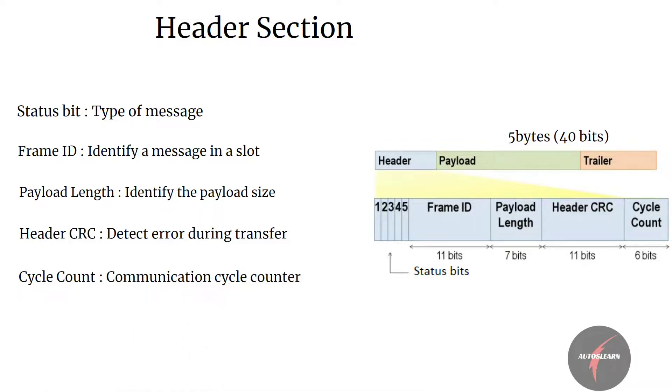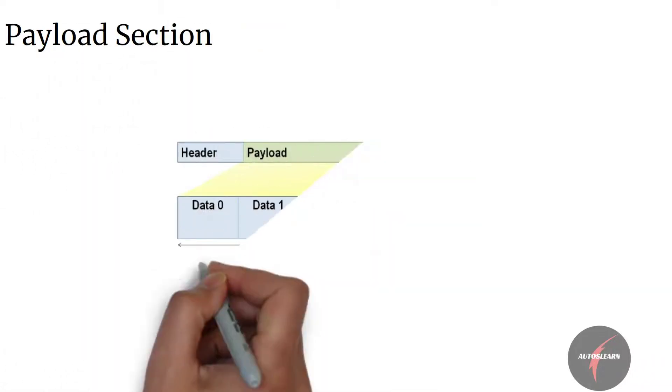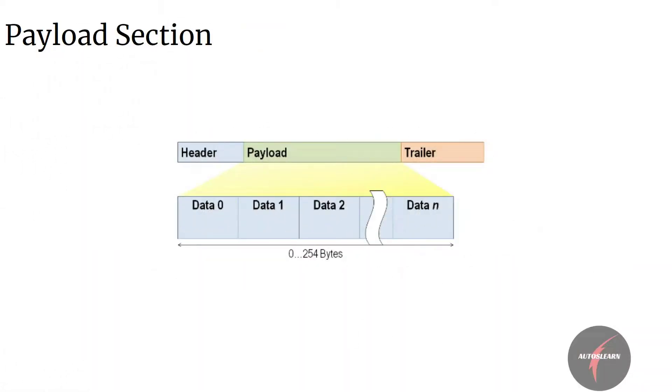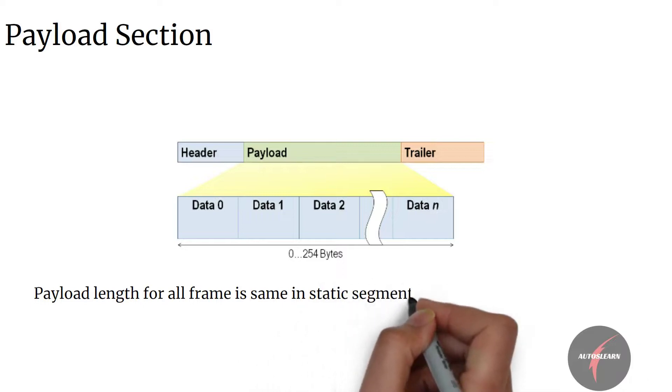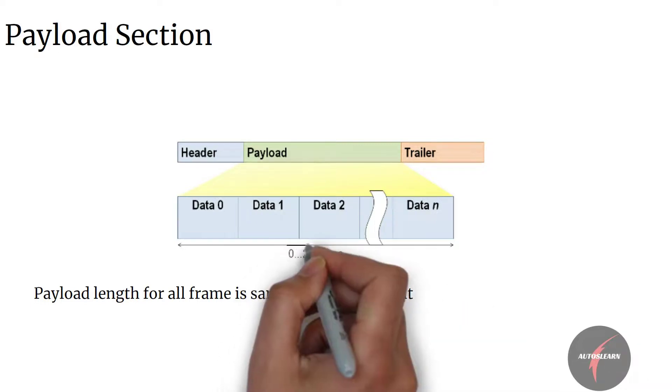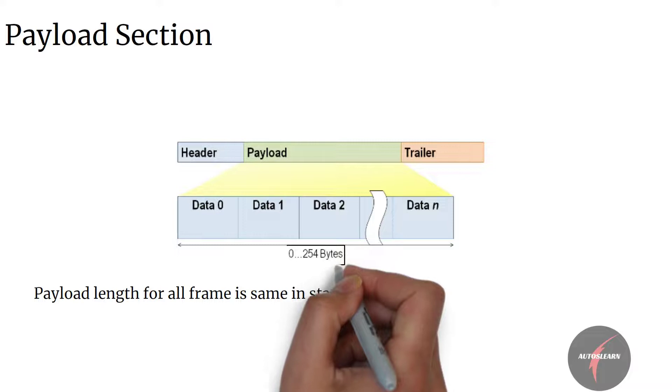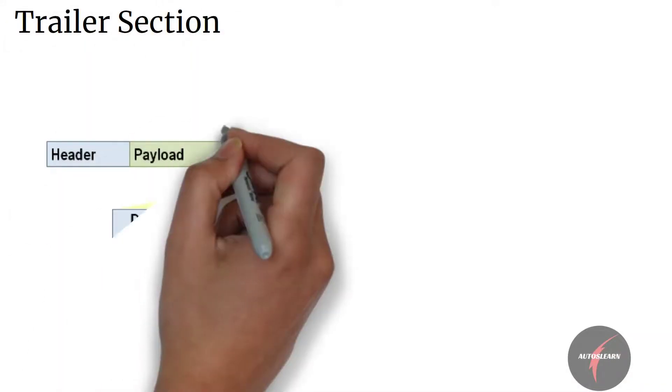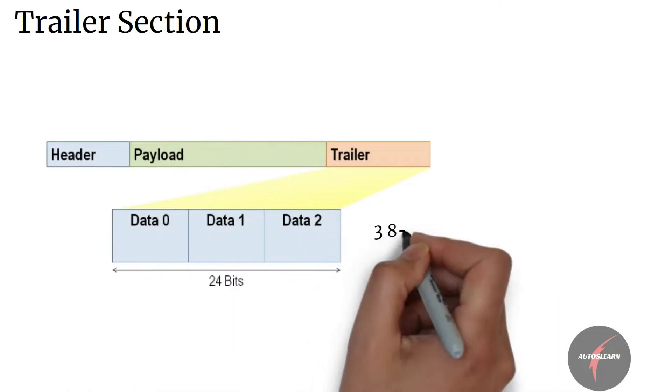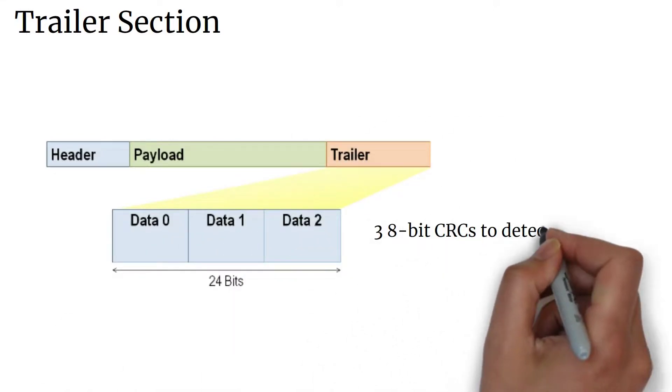Payload contains data to be transferred by the current frame. The payload length should be the same for all frames sent in the static segment. The length of the FlexRay payload or data frame is up to 127 words or 254 bytes, which is over 30 times greater compared to CAN. The trailer contains a 24-bit CRC to detect errors in the transfer of the data frame.